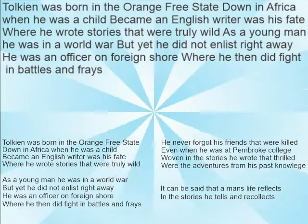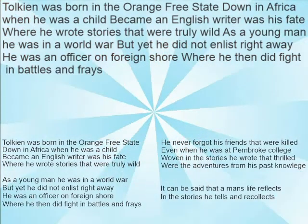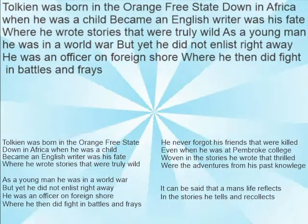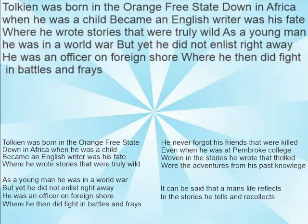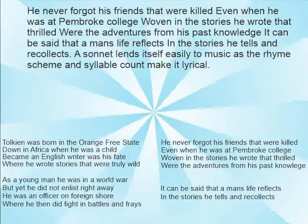My sonnet is: 'Tolkien was born in the Orange Free State, down in Africa when he was a child. Became an English writer was his fate, where he wrote stories that were truly wild. As a young man he was in a world war, but yet he did not enlist right away. He was an officer on a foreign shore, where he then did fight in battles and frays. He never forgot his friends that were killed, even when he was at Pembroke College. What were the stories he wrote that thrilled, or the adventures from his past knowledge. It can be said that a man's life reflects in the stories he tells and recollects.'